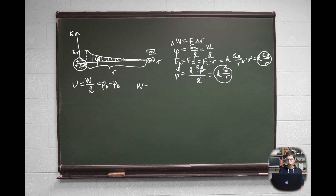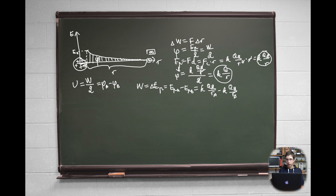Work is the difference of these two potential energies: W = ΔE_p = E_pA − E_pB. Applying the formula for potential energy k·Q·q/r, we get the formula for this work.